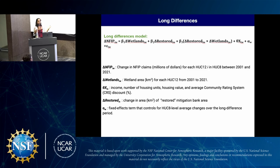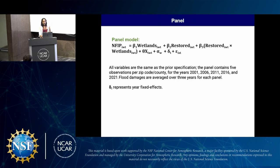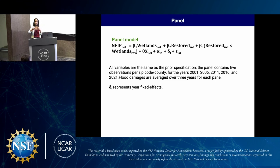The restored wetland area comes from the boundaries of the mitigation banks. Theta is a suite of covariates that includes housing units, housing values, population, and community rating system discount. Alpha is a fixed effects term which controls for all time-invariant differences between HUC-8s. The second model is a panel model — instead of looking at the long environmental change over 20 years, I'm looking at panels of five years with snapshots of 2001, 2006, 2011, 2016, and 2021. There's also a year fixed effects term which controls for time-varying differences between HUC-8s.